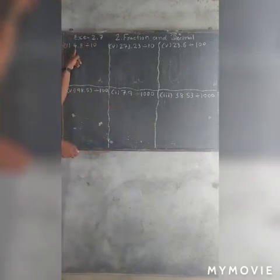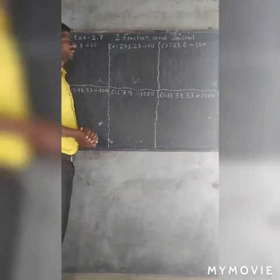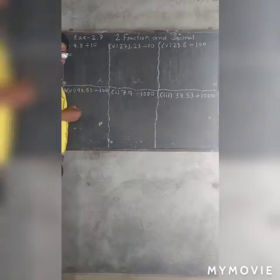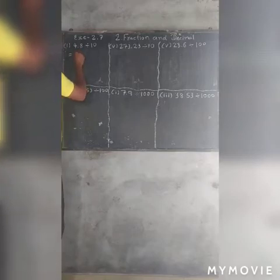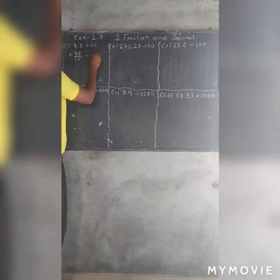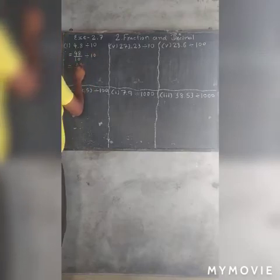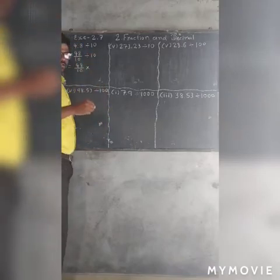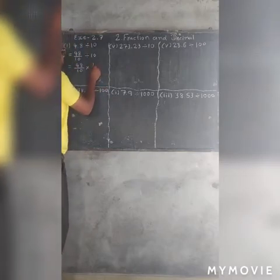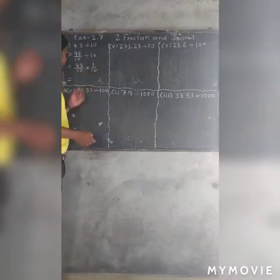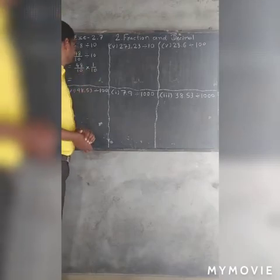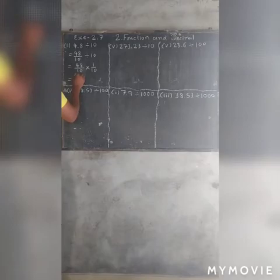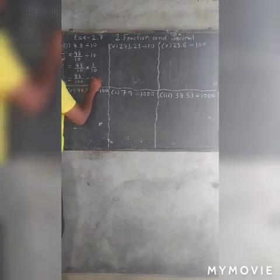First sum: 48 divided by 10. First step, move 48 into a fraction: 48 over 10. Second, 48 divided by 10, multiply by the reciprocal, which is 1 over 10. Now we have 2 zeros in the denominator, so 48 over 100. Our answer is 0.48.